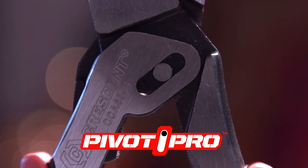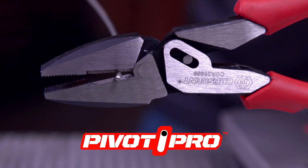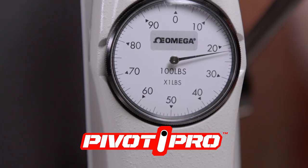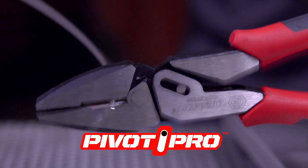Pivot Pro's unique design delivers a more efficient transition of power from the handle to the jaws, making the same cut with an average of 35 pounds of force.